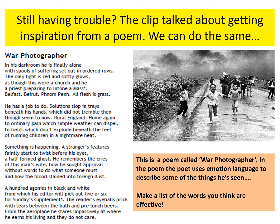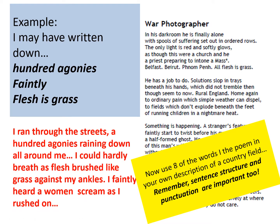What if you're still having trouble with vocab choices? Many of you will have covered the literature exam and learned quotes from 14 to 18 poems filled with wonderful vocabulary. Why not take some of these to your own writing? For example, the poem War Photographer — I looked for interesting word choices: 'a hundred agonies,' 'faintly,' 'flesh's grass.' Taking those phrases into a narrative: 'I ran through the streets, a hundred agonies raining down all around me. I could hardly breathe as flesh brushed like grass against my ankles.'